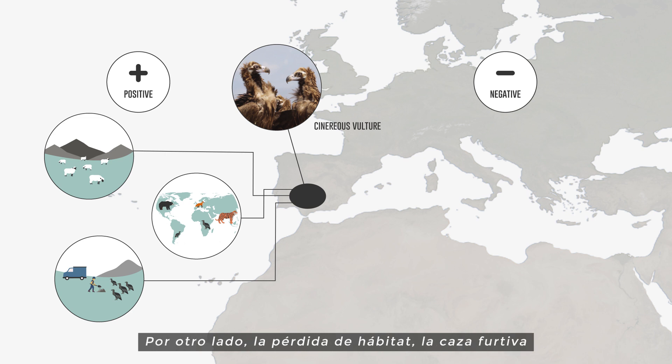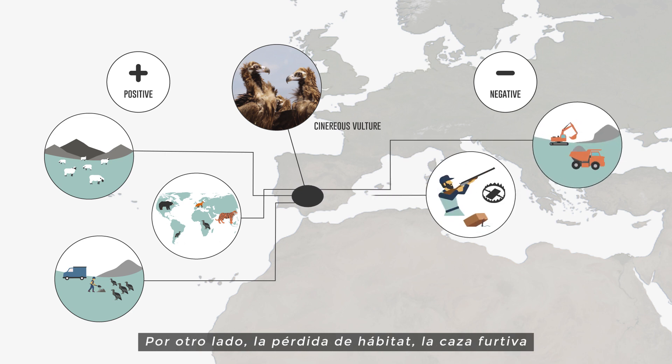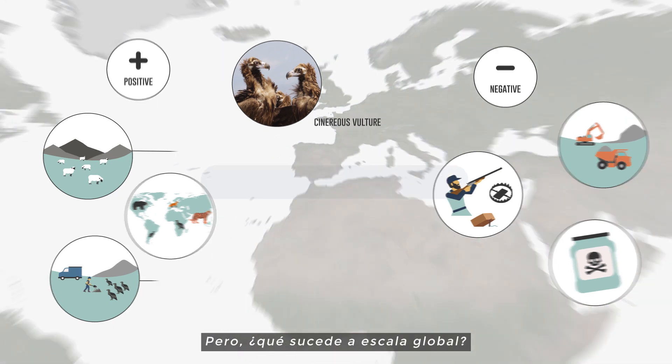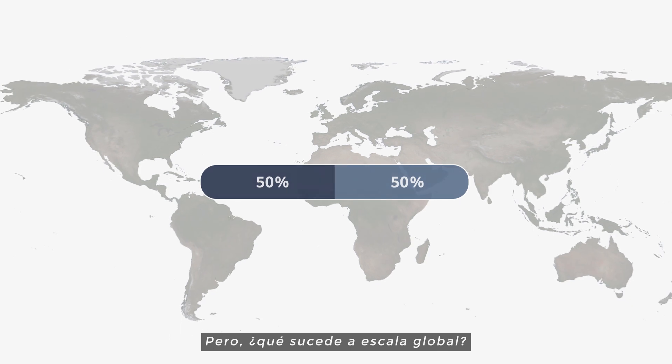On the other hand, habitat loss, poaching, or poisoning may reduce their populations. But what happens at a global scale?